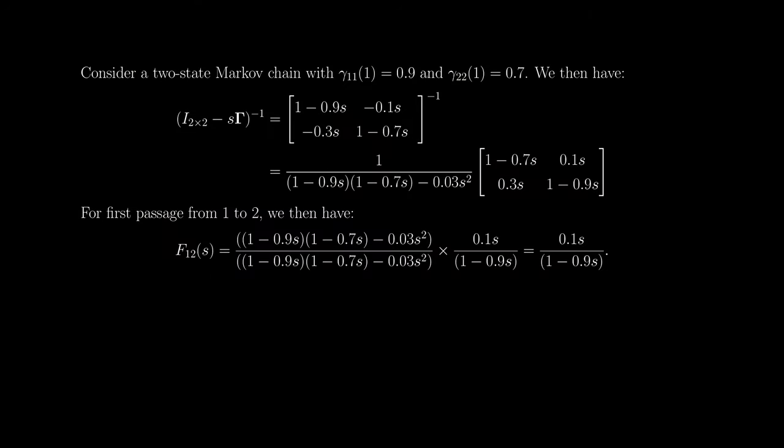As a concluding example, consider a two-state Markov chain where the probability of transitioning from state one to state one in one step is 0.9, and from state two to state two in one step is 0.7. Those two quantities define the transition probability matrix entirely. We first calculate the matrix of pseudo-generating functions: compute I − s·Γ and take its inverse, ending up with a matrix of ratios of polynomials.